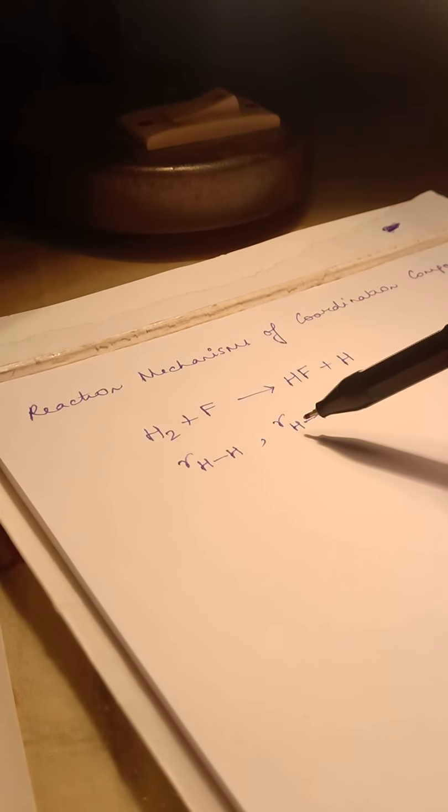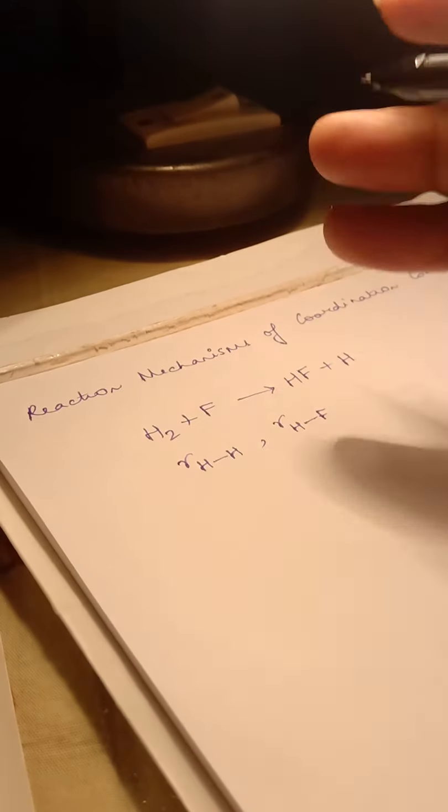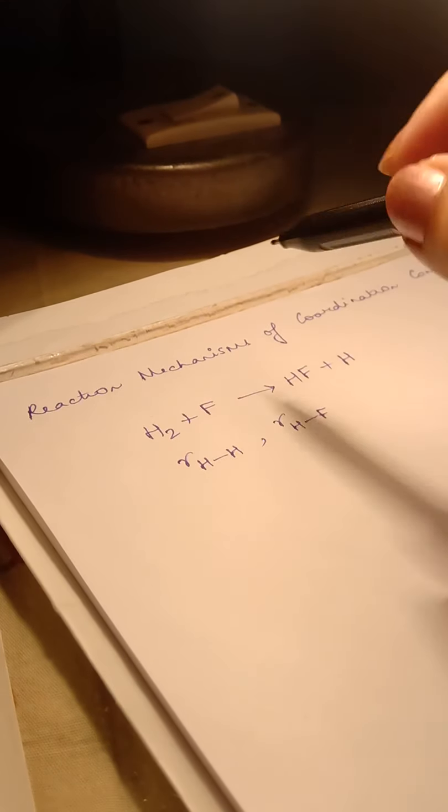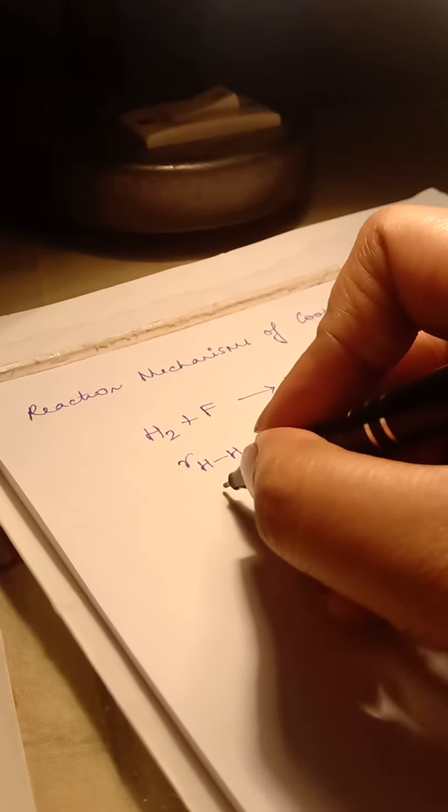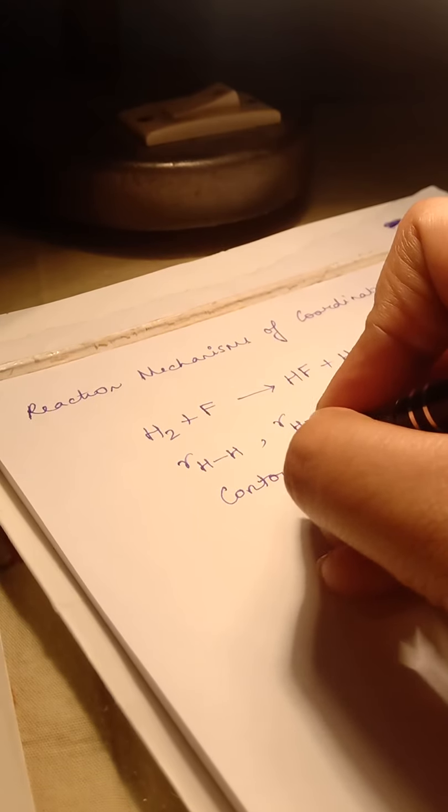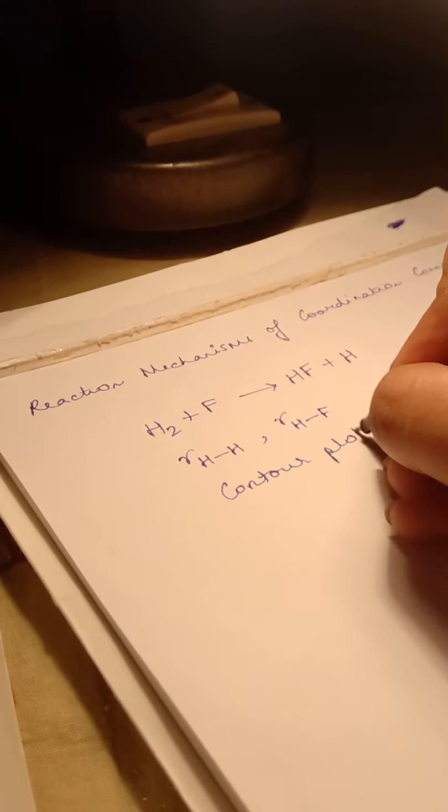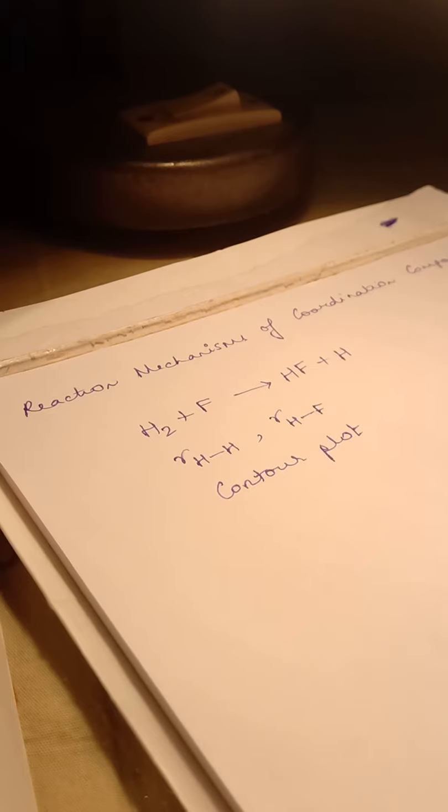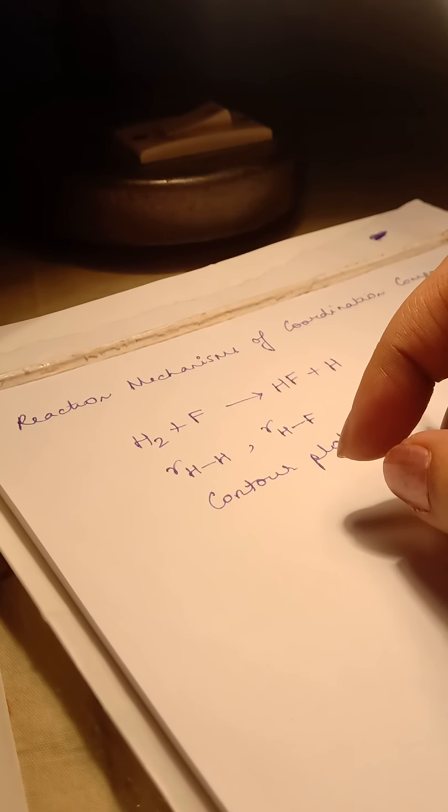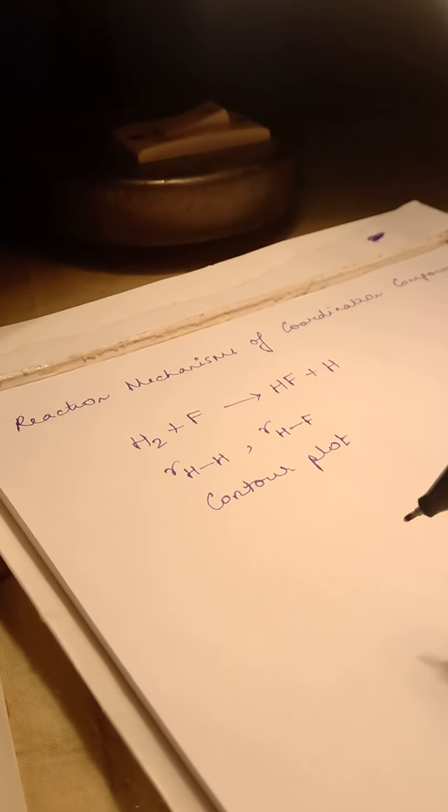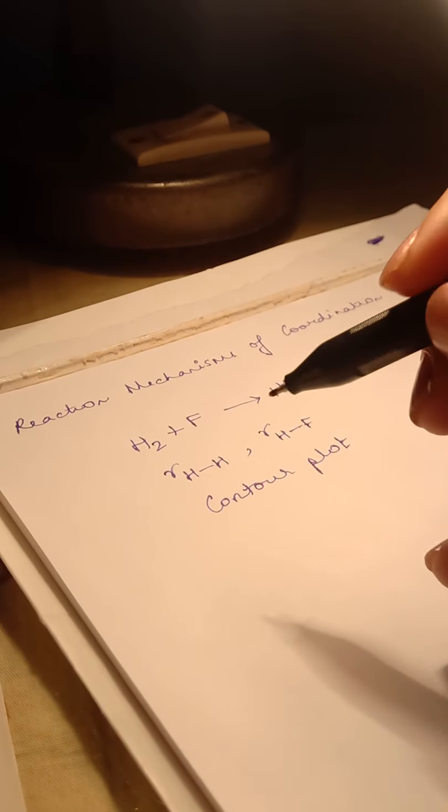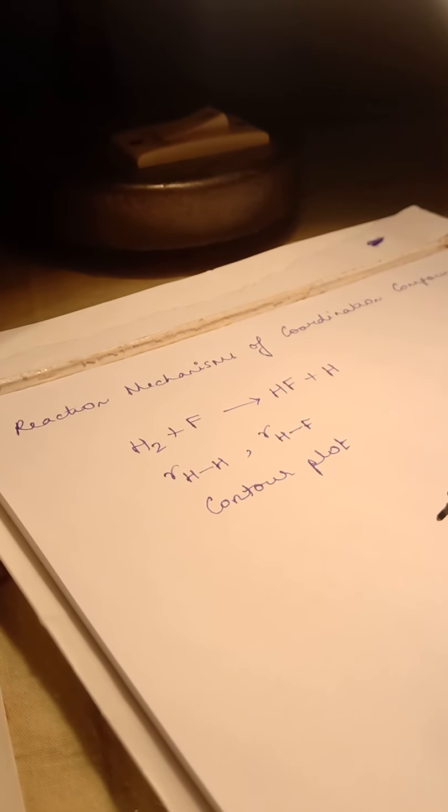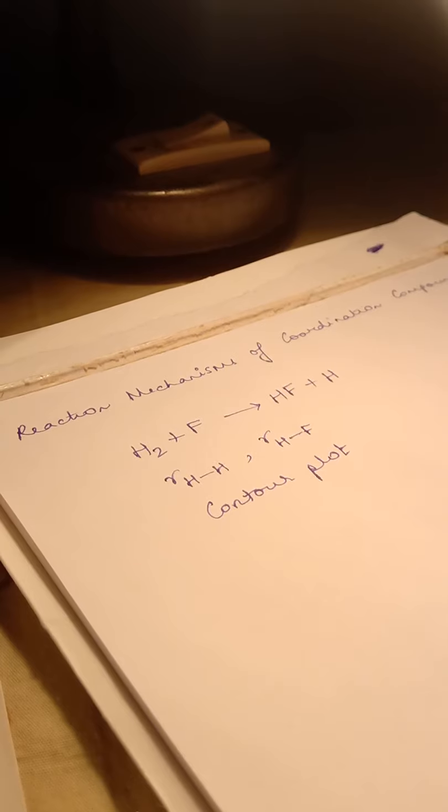Now if you want to plot these two with respect to potential energy it will be three factors, so it will be a 3D diagram. This 3D diagram is also called a contour plot. In this contour plot, the pathway which follows the minima of all the contours, that is which passes through the valley of all the contours, is called the reaction coordinate.